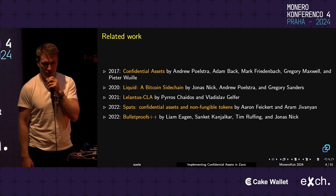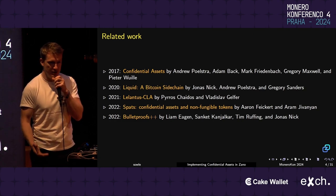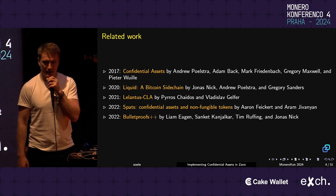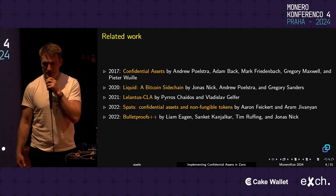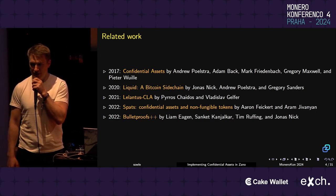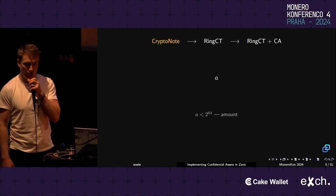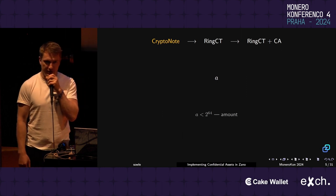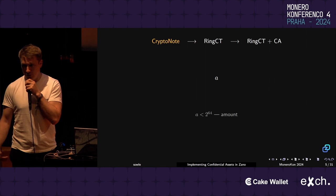Funny enough, when we first started thinking about how to implement Confidential Assets in ZANO, we came up with two ideas, and later found that both had more or less been presented by researchers in different works. We stuck to one approach, mostly following the Confidential Assets approach by Andrew Poelstra and Pyrrhus Chaitos. Before going deep into details and challenges, I'd like to briefly recall how classic CryptoNote and Ring Confidential Transactions look like, and then show what changes we made to make it compatible with Confidential Assets.